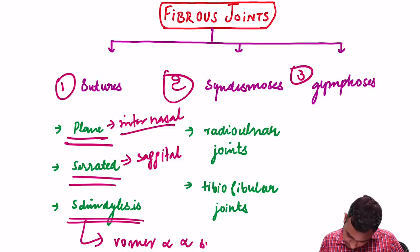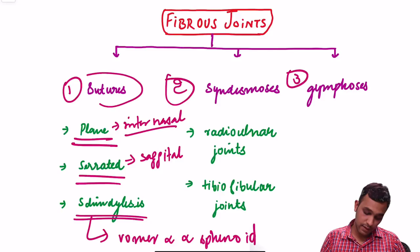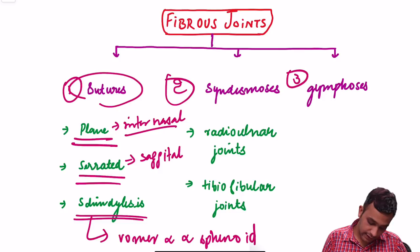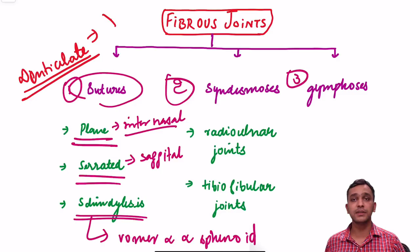Other types of sutures include the denticulate suture. The example of the denticulate suture is the lambdoid suture — the suture between the parietal bone and the occipital bone.